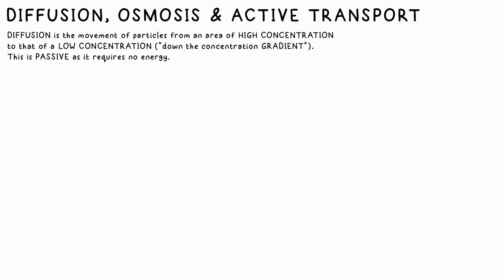Diffusion is the movement of molecules or particles from an area of high concentration to an area of low concentration — we say they move down the concentration gradient. Like a ball rolling down a hill, it happens by itself; this doesn't require any energy input, so we say it's passive. This will happen across a semi-permeable membrane if the holes are large enough — for example, water can pass through but glucose will not, at least not by diffusion.